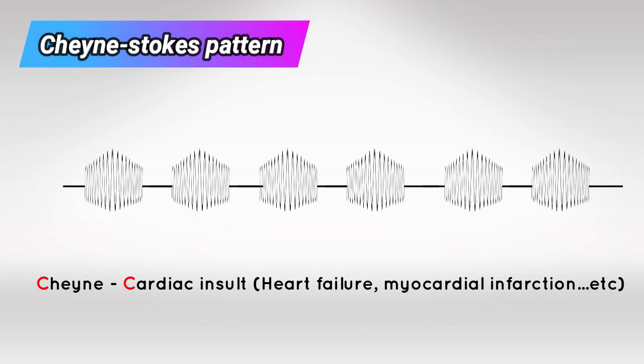Next we have Cheyne-Stokes pattern, which is the result of cardiac damage. It's similar to Biot's breathing pattern because they're both preceded and followed by a period of apnea. However, Cheyne-Stokes pattern is gradual increase followed by gradual decrease. And here is how it sounds like.